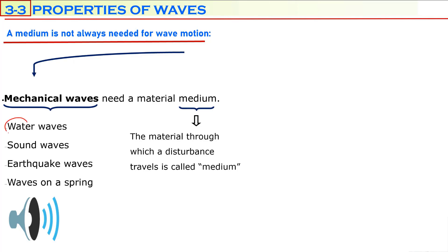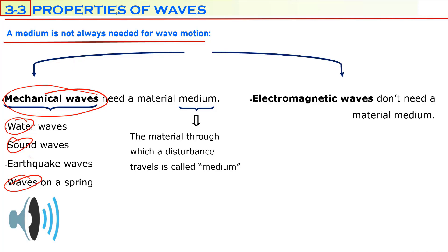Water is a medium for water wave disturbance. Sound is a mechanical wave — air is the medium for that disturbance. Earthquakes are mechanical waves — the earth's crust is the medium. Waves on a spring use the spring as the medium. Any wave which needs a medium is named in physics as a mechanical wave. There are also some waves which do not need a material medium — those are called electromagnetic waves. Mechanical waves cannot travel in free space where there are no molecules, but electromagnetic waves can.